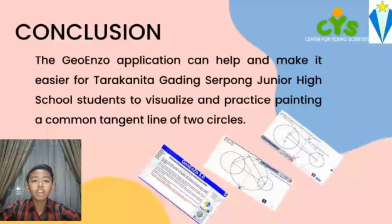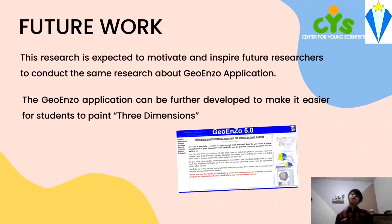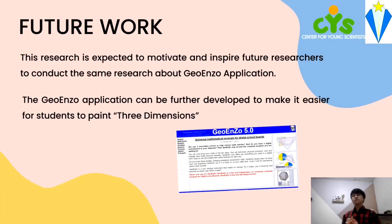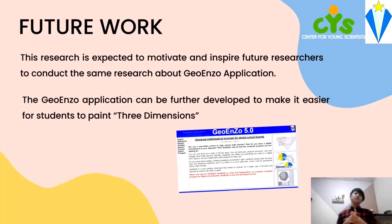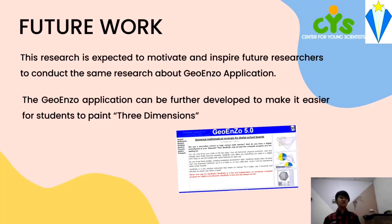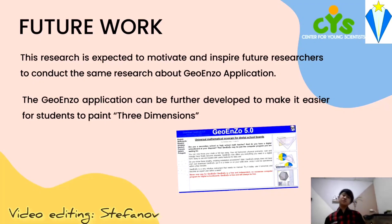Conclusion: the geo-enzo application can help and make it easier for Tarakanita Gani Serpong Junior High School students to visualize and practice painting a common tension line of two circles. For future work, this research is expected to motivate and inspire future researchers to conduct similar research about the geo-enzo application, which can be further developed to help students paint in three dimensions.